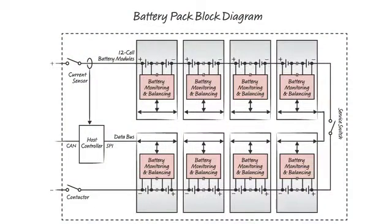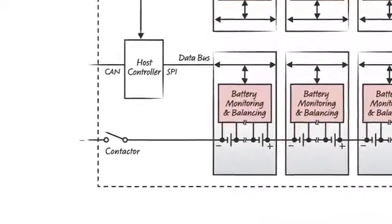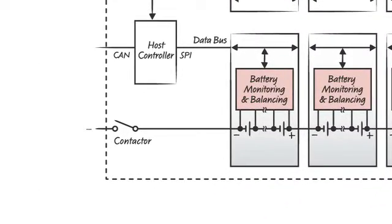The BMS also plays an important role in maintaining safety. If an adverse condition is detected within the pack, the unit is taken offline by opening the switches or contactors located at the terminals of the pack.